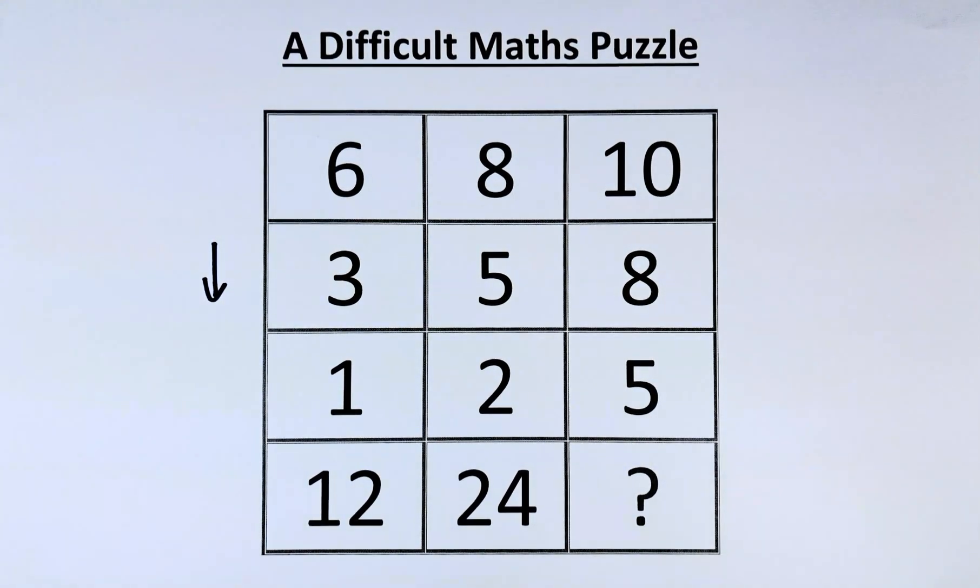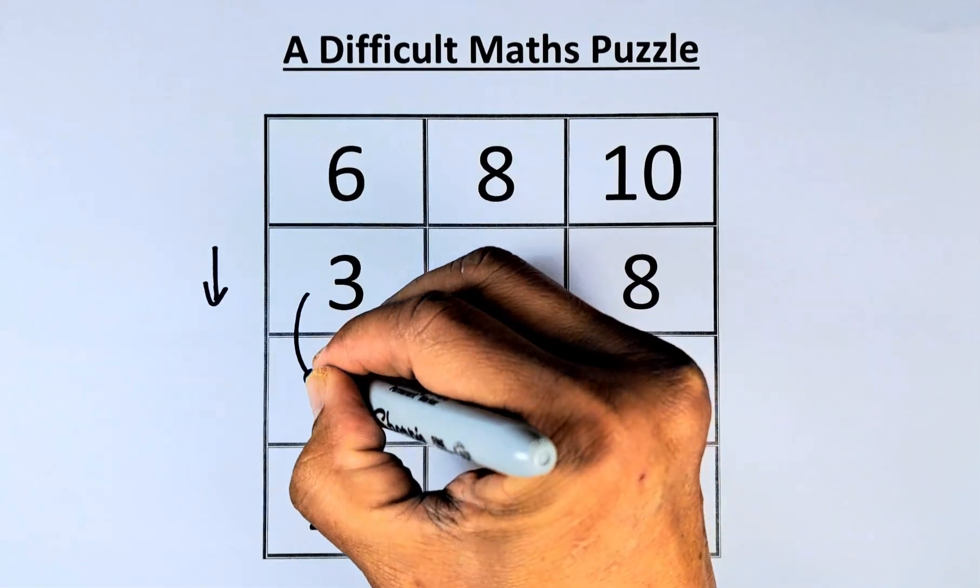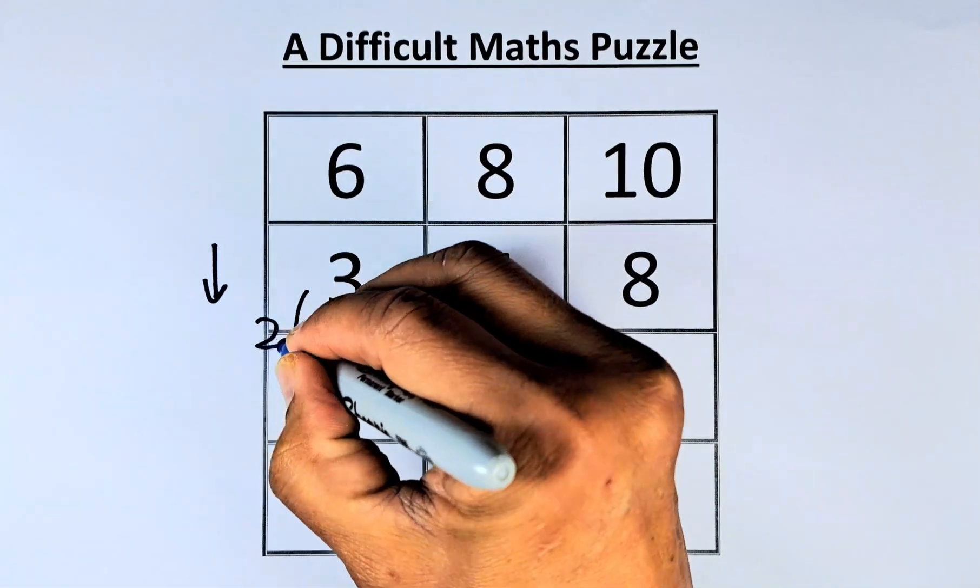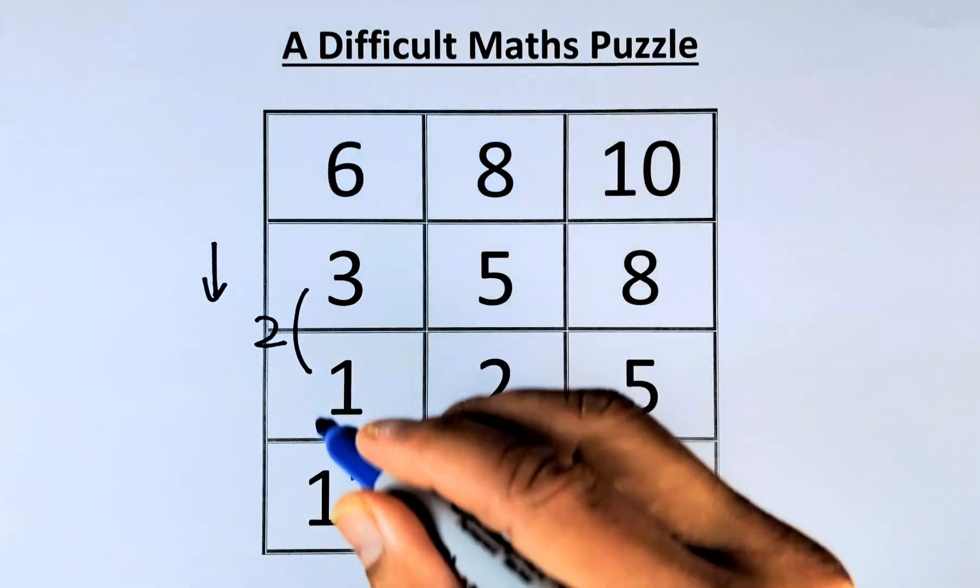To do that, it's quite straightforward. What we do, we take 3 minus 1, that gives us 2. 2 multiplied by 6 will give us 12. So that is how you calculate the first one.